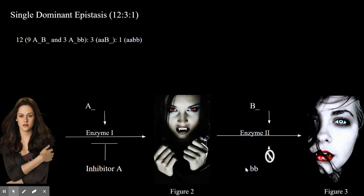Therefore we will see 12 humans, 3 vampires with blue eyes, and 1 vampire with red eyes. This results in a ratio of 12 to 3 to 1 which is a single dominant epistasis.